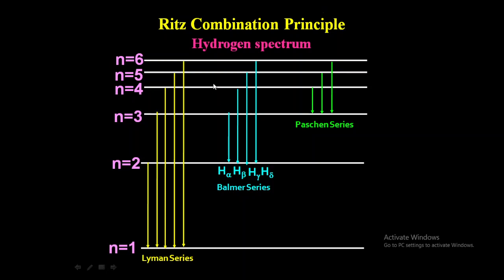Before going into it, this diagram we have seen in the last lecture. This diagram is related to the hydrogen spectrum. These yellow lines, blue lines, and green lines are nothing but spectral lines corresponding to the hydrogen spectrum. These yellow lines belong to the Lyman series, these blue lines belong to the Balmer series, and this green line belongs to the Paschen series. So these are the spectral series of the hydrogen spectrum.